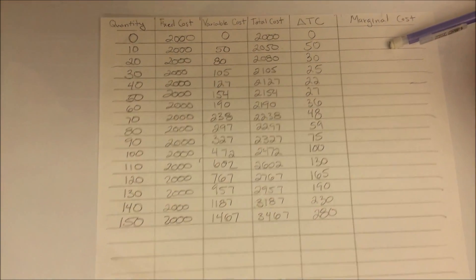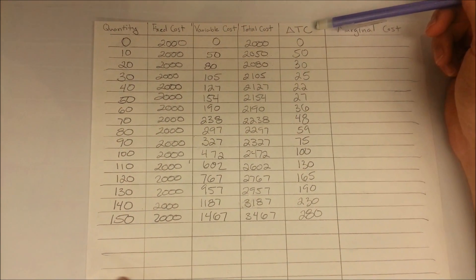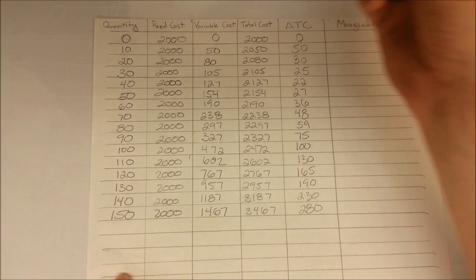All that is left to do to determine our marginal cost is to take our change in total cost and divide it by our change in quantity.